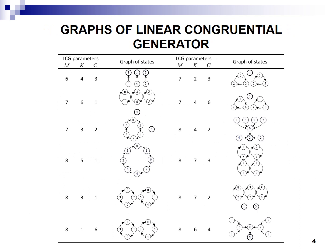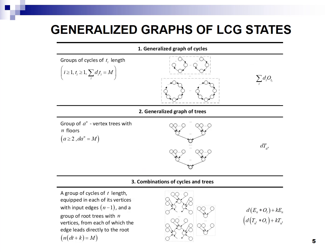The examples of graphs of monads for some linear congruential generator parameters are shown in the table. The structures of graphs of monads of the linear congruential generator were analyzed and summarized. Some typical graphs of the linear congruential generator are presented on the screen. Among the typical linear congruential generator graphs, one can see: the first one, a generalized graph of cycles; the second one, a generalized graph of trees; and the third one, combinations of cycles and trees.